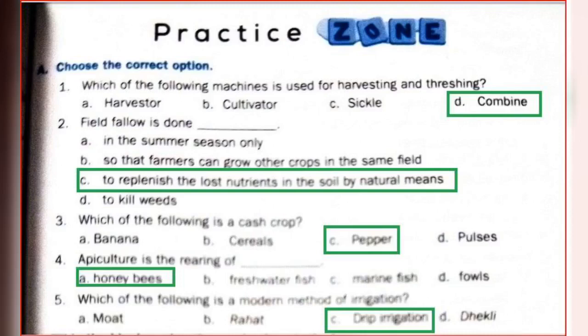Harvesting and threshing. Combine. Third fallow is done. Replace the lost nutrients in the soil by natural means. Which of the following is a cash crop? Sea pepper. Aquaculture is the rearing of honeybees. Which of the following is a modern method of irrigation? Drip irrigation.